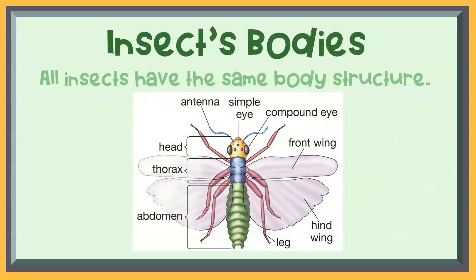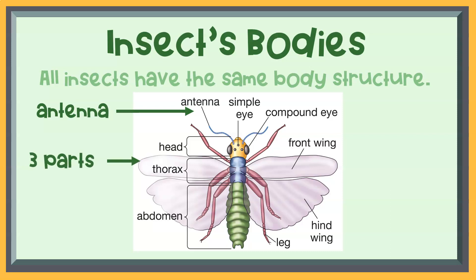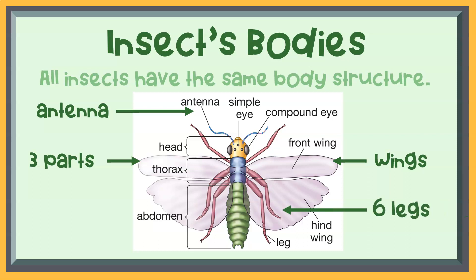Insects' bodies. All insects have the same body structure. They have antennae and three body parts. The parts are called the head, the thorax, and the abdomen. They also have wings and six legs.